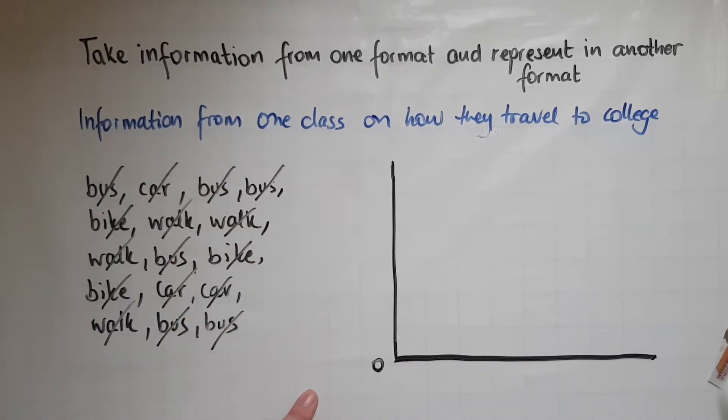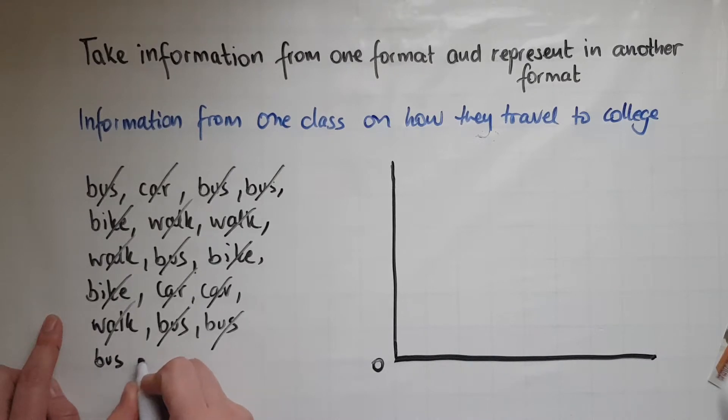And then normally we put the numbers in there. So let's have a look. We had bus, one, two, three, four, five, six. So six travelled by bus. There were three who travelled by car. And we had bike, three, and walk, four. So I can double check here to make sure that the information is correct.